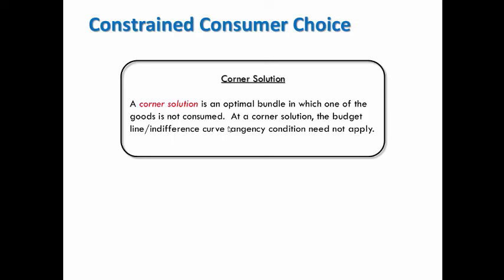In this video, I'll show you one case of what's called a corner solution. A corner solution is an optimal bundle in which one of the goods is not consumed. That is, it's an optimal bundle where you spend all of your income on one good and none of your income on the other good. At a corner solution, the budget line and indifference curve tangency condition might not apply.